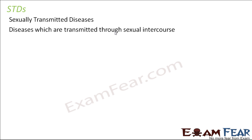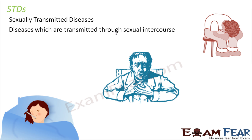During sexual intercourse, when the penis and the vagina are in contact with each other, there are chances that diseases might get transmitted. Some of the common examples of sexually transmitted diseases are very deadly. For example, AIDS is one such disease which is transmitted by sexual contact, and it is a deadly disease.